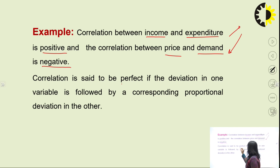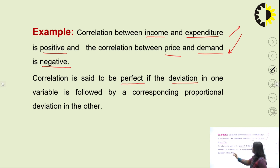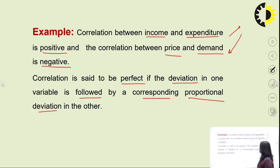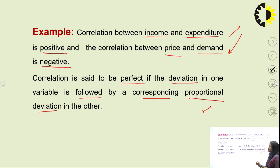Correlation is said to be perfect if the deviation in one variable is followed by a corresponding proportional deviation in the other. That means if one is increasing by a certain amount, then the other must also increase or decrease in the same proportion. That will be a proportional deviation and that will be a perfect example of correlation.